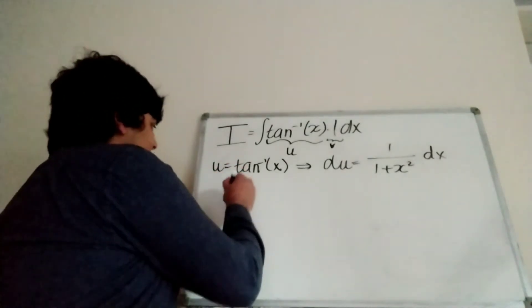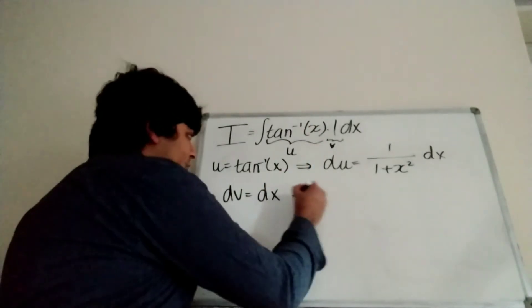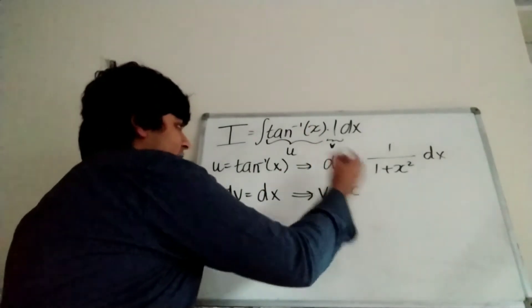And now we have dv, which I'm saying is just 1, so just 1 dx, which is just dx. So of course that means that v is just equal to x.